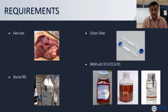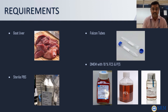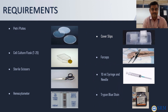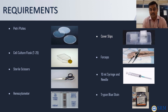The requirements for this experiment include tissue obtained from goat liver, sterile falcon tubes, sterile PBS to wash the goat liver, DMEM media with 10% FCS, as well as penicillin and streptomycin. Further requirements include plastic plates, cell culture clamps, sterile scissors to cut the tissue, a hemocytometer for cell counting, cover slips, forceps to pick up and wash the tissue in PBS, a 10 ml syringe, needle, and trypan blue stain for staining cells.